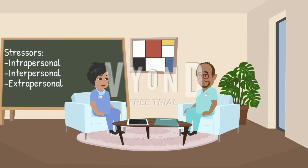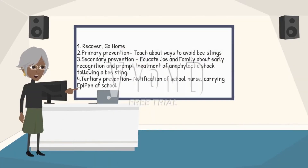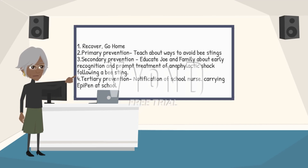The nursing goals should be set collaboratively with the family. So together with Joe and his dad, the nursing team came up with four goals. One: feel better right now and go home today able to breathe easily with no medical danger from the allergic reaction. Two: primary prevention — teach about ways to avoid bee stings. Three: secondary prevention — teach the child and family about early recognition and prompt treatment of anaphylactic shock following a bee sting. Four: tertiary prevention — notification of the school nurse and carrying an EpiPen at school.